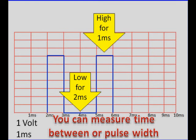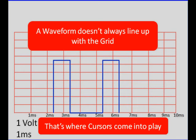Now we're looking at the high up there. We also could be looking at the low portion. In this case, it goes from three to five and that's two milliseconds in time. But if we want to make real precise measurements, we go beyond the grid and we'll use cursors.